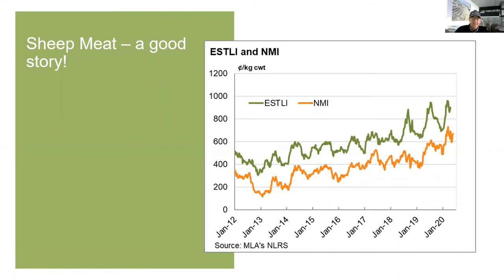The eastern states trade lamb indicator — the green line — along with the national mutton indicator, are both rallying. One of the interesting things is that in Australia, our biggest market for Australian lamb is still the domestic market — we're still the biggest consumers. But the price is being driven by export demand. With mutton, we consume virtually zero in Australia, but other countries are really demanding it.